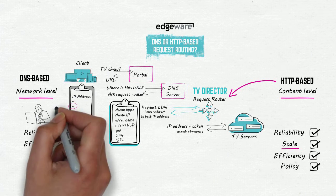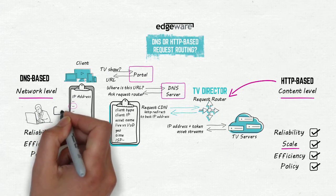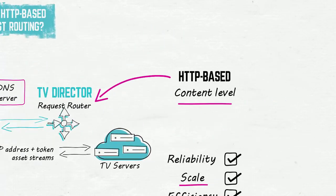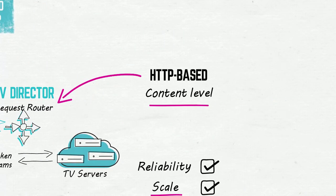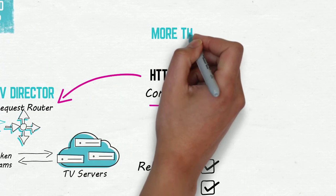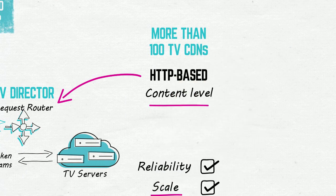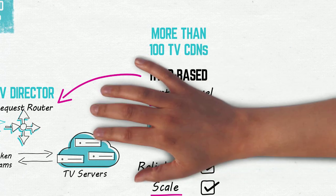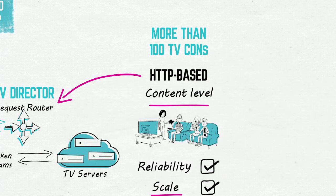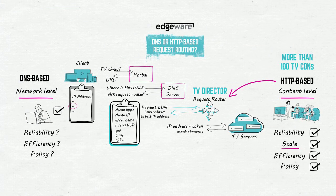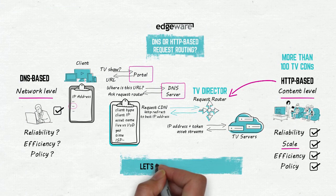DNS-based request routing is great for web surfing and can work well for small-scale video streaming, or if your content's not that critical. But all of our customers have built their TV CDNs using HTTP-based request routing, so they can deliver a scalable and glitch-free viewing experience.